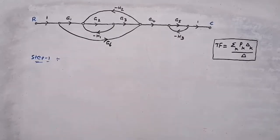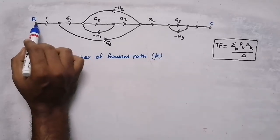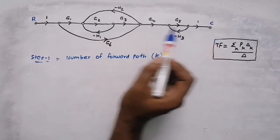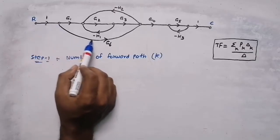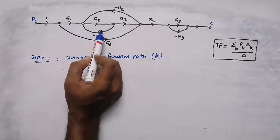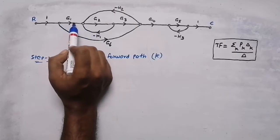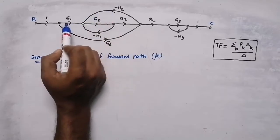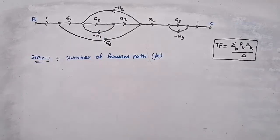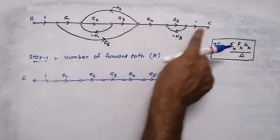The first step is to find the number of forward paths — that is our k value. A forward path is any way we can reach from input to output. This is the first straight way. In the second way, the graph can go along an alternate route and reach the output. Some directions have arrows opposite to our direction, so we cannot go through those ways.